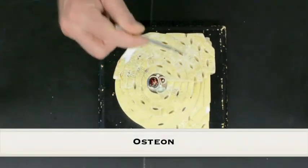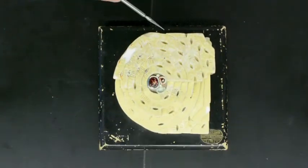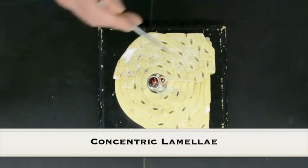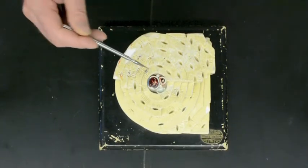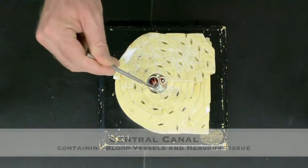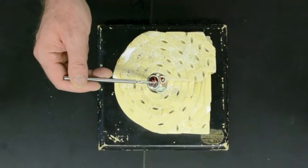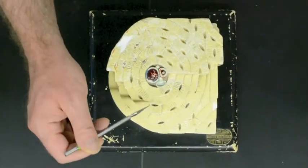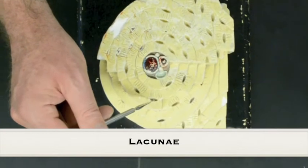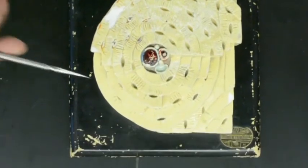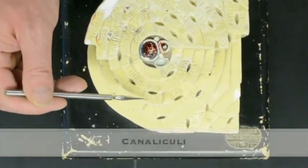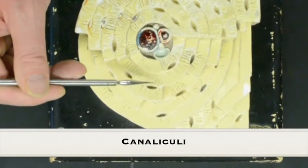Now if we take a closer look even further, here we have one osteon. We can see the concentric lamellae running around. Here we have the central canal that contains a vein, an artery, and a nerve. We can see the lacunae here, which is where the osteocytes reside, and then they have the little canaliculi, which are the cytoplasmic extensions that come out.